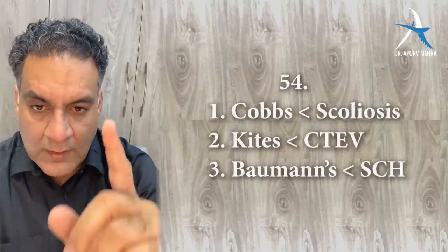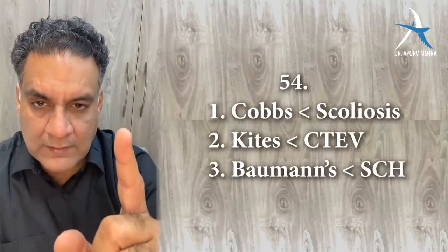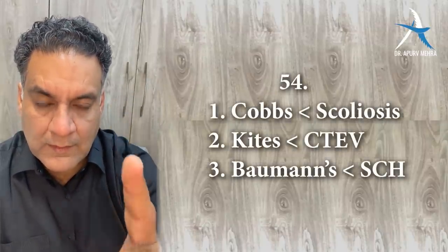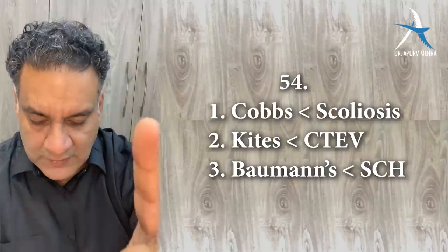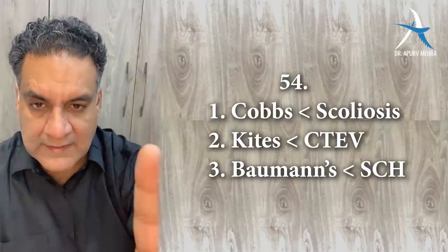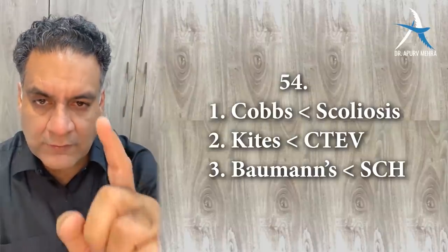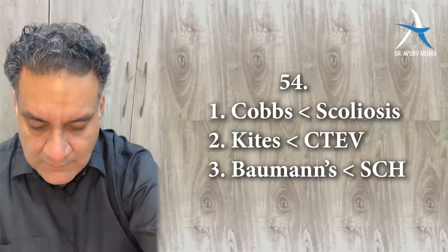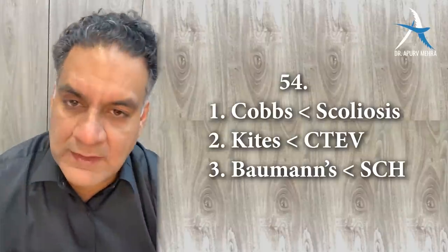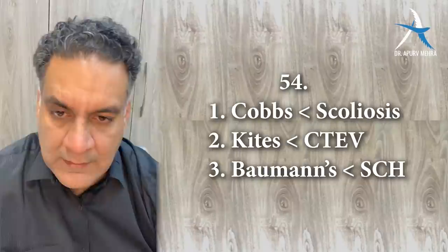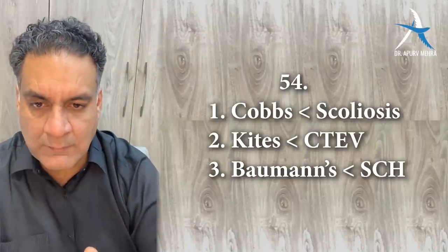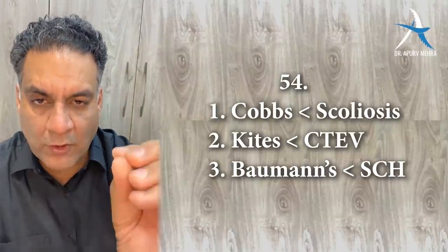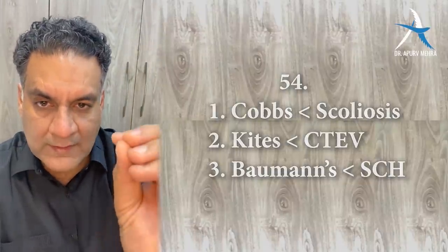Point number fifty-four: remember three more angles — Cobb's angle for scoliosis, Kite's angle for CTEV (congenital talipes equinovarus), and Baumann's angle around the elbow for cubitus varus.